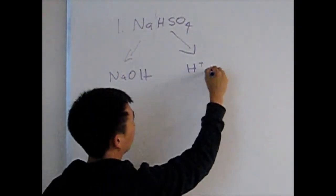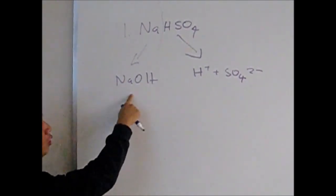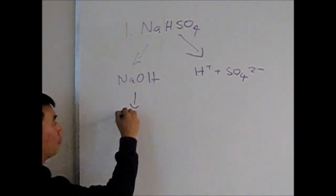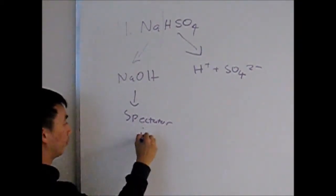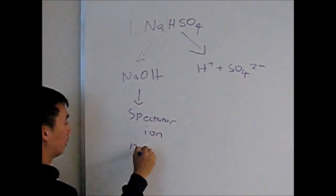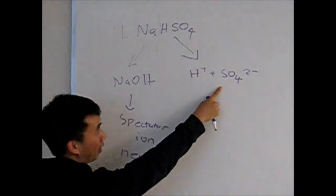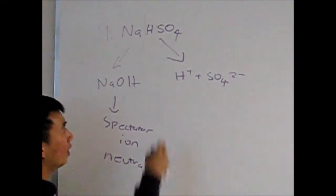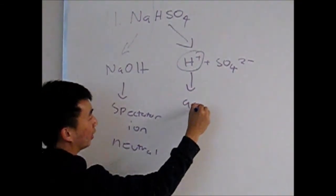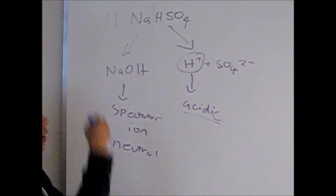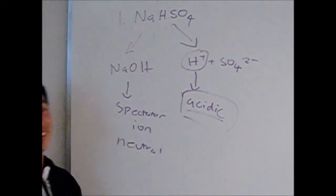We know that NaOH is a strong base and that it basically dissociates completely, making Na+ a spectator ion. Because it's a spectator ion, it is neutral, making the Na+ neutral. Now, H+ and SO4 2- is actually kind of acidic because it has an H+. Because it's a polyprotic acid, it's able to donate hydrogens into the solution, making the whole thing slightly acidic. Thank you.